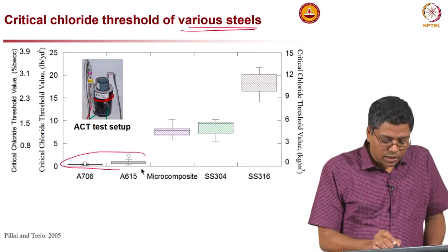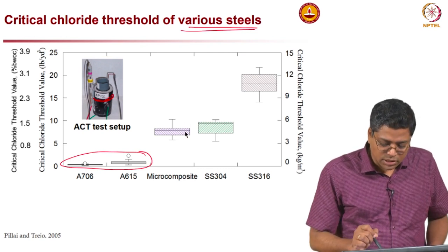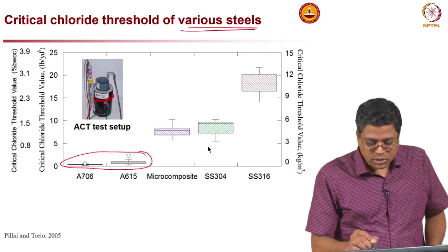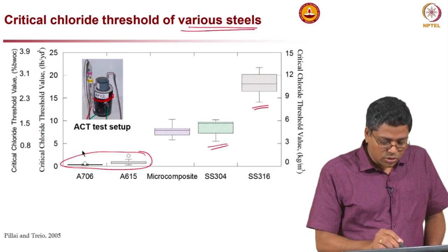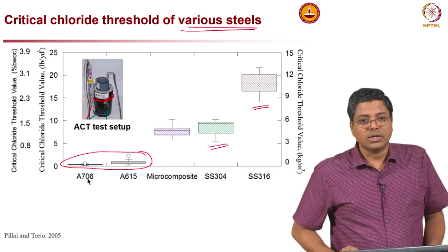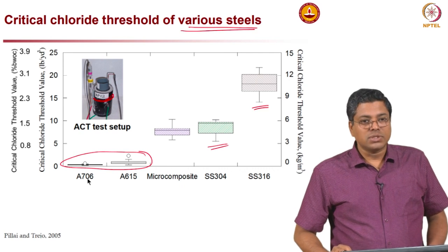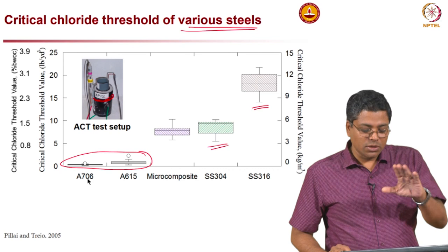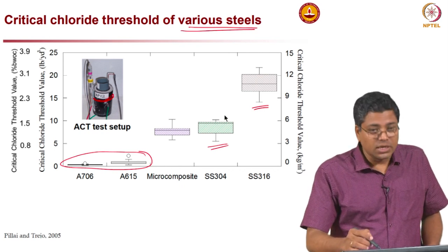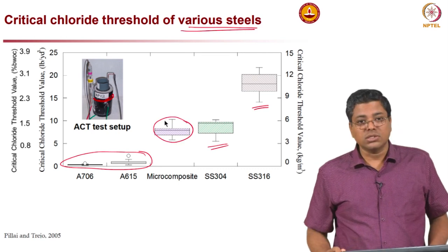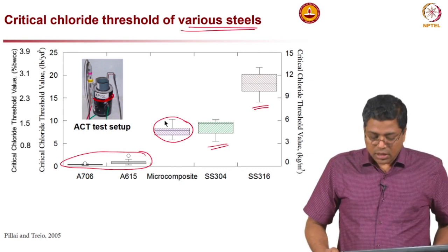The chloride threshold can be very different for different types of steel. Typical steels used in the market — such as A706 or A615 — have lower thresholds, while special corrosion-resistant micro composite steels and stainless steel rebars exhibit much higher thresholds. The type of steel used is definitely an influencing parameter on service life. If stainless steel cannot be used due to cost, corrosion-resistant steel can provide a larger chloride threshold and hence longer service life.